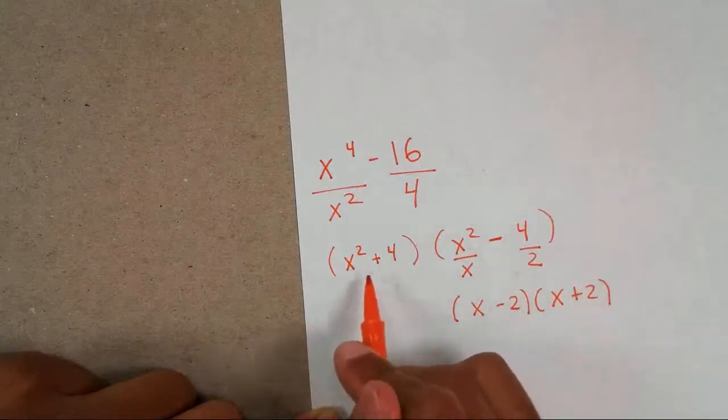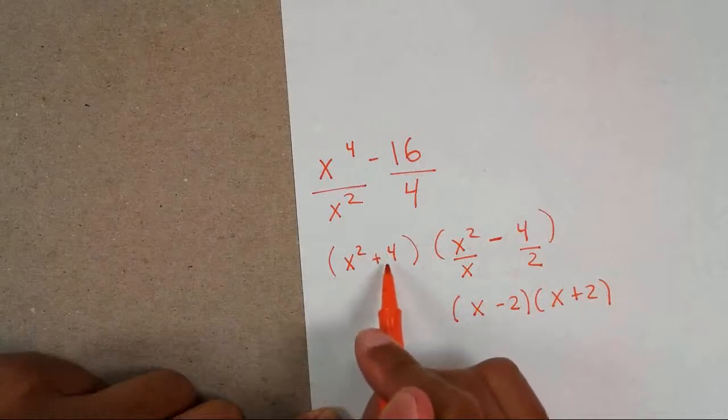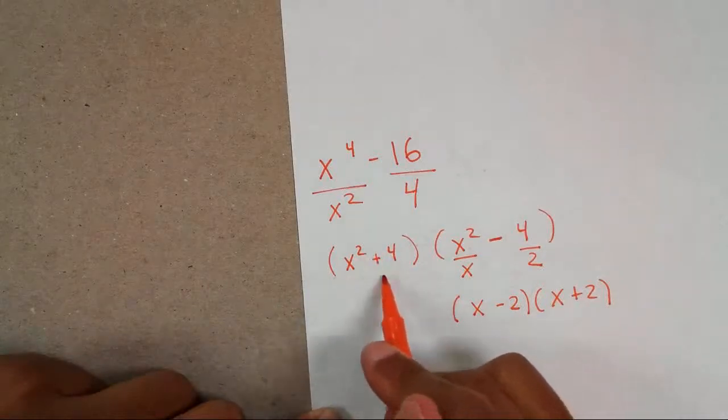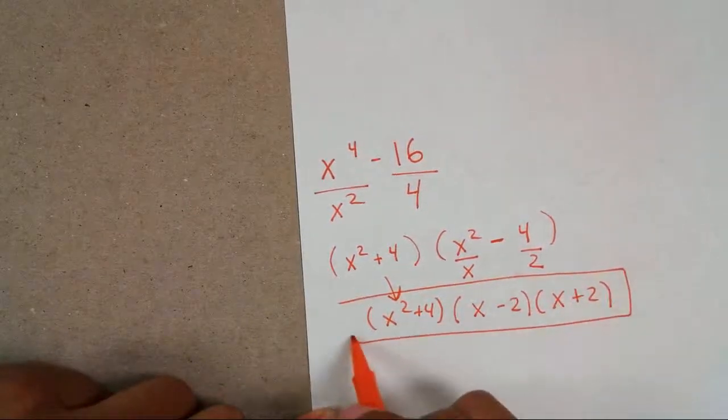But what about this one? Why couldn't I actually factor out this one? The reason is you see how it's a sum of squares and the sum of squares is prime so you can't touch it. So it just drops down to give you x squared plus 4. Box in your answer and you're done.